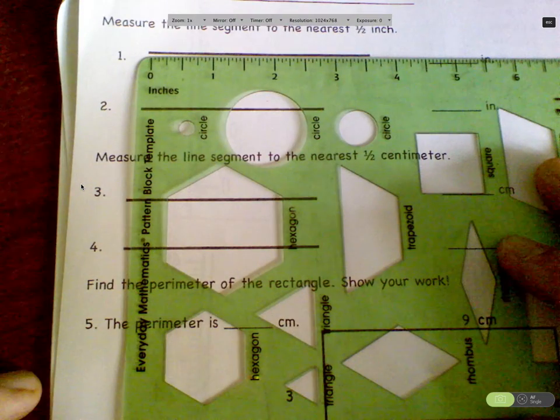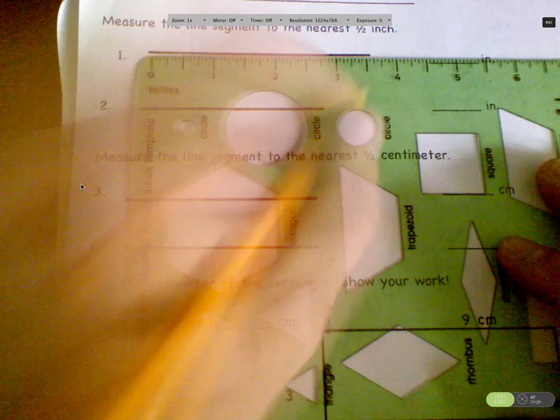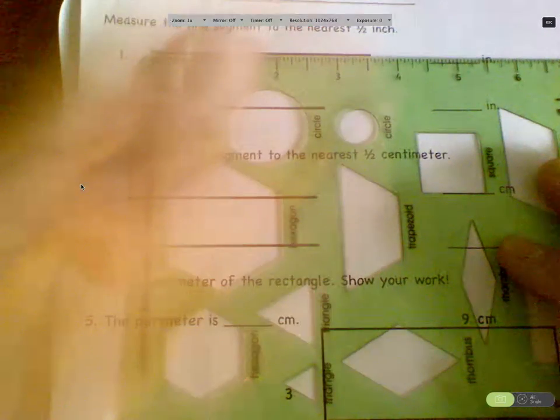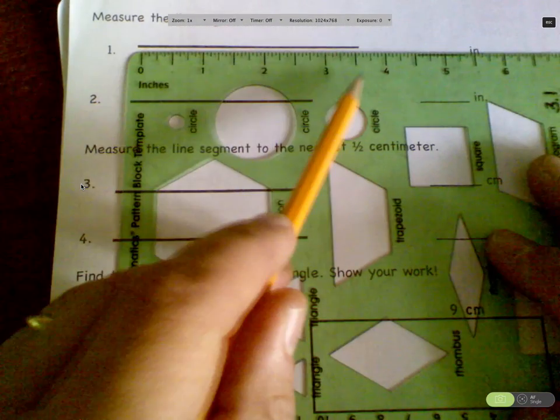Nearest half inch can be three, three and a half, or four. What do you guys think? Four. Really? I think it's closer to three and a half. I think that's much closer. Actually, if you look at that, I'm going to go with three and a half.